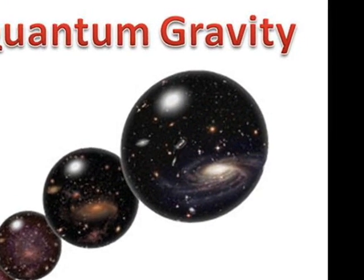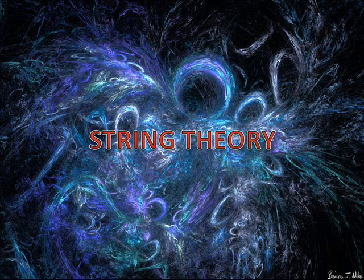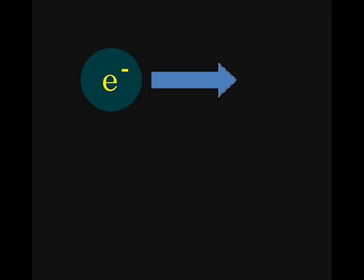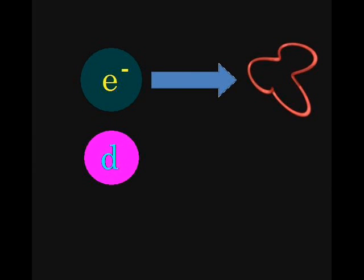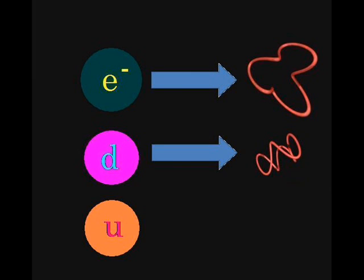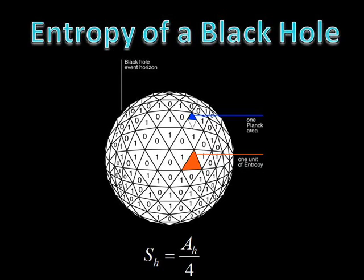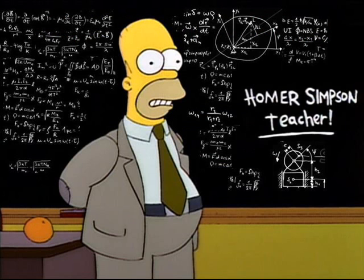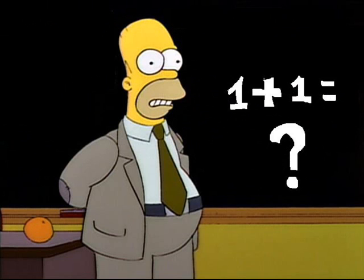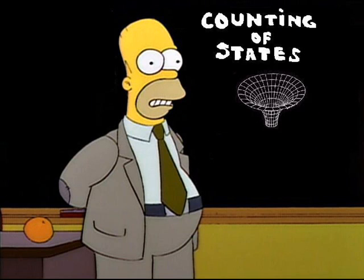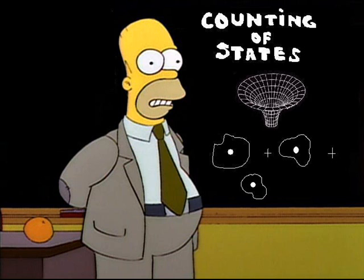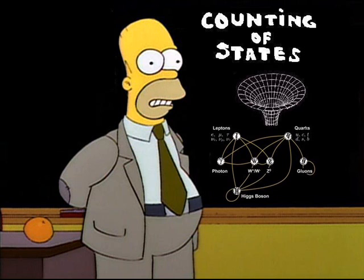The most promising theory of quantum gravity is string theory, in which each particle is identified as a vibrational mode of an elementary macroscopic string. And we can use it to calculate the entropy of a black hole. To simplify our calculations, we need a type of black hole whose counting of states when there are no interactions remains valid when there are.